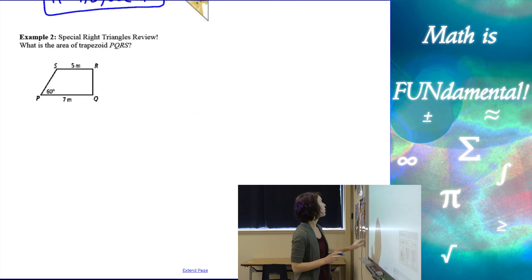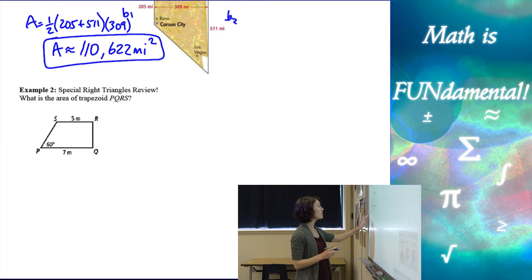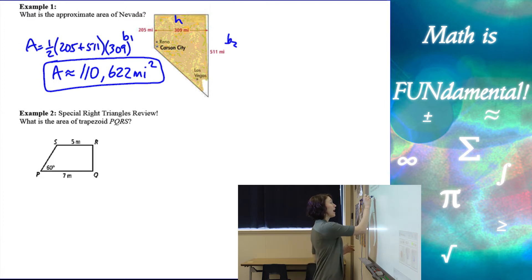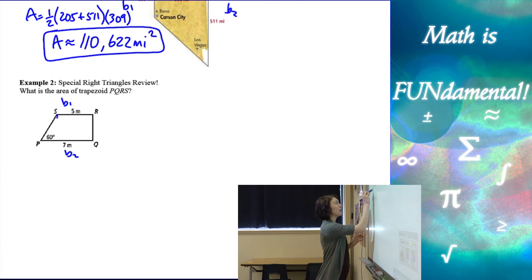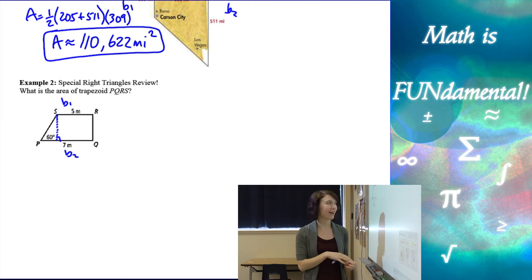All right, second problem here. We're going to find the area of this trapezoid, but if you notice, we have our base one and our base two, but they don't give us the length of the height. But they give us an angle of 60 degrees. And if you remember back a few lessons ago, actually a good number of lessons ago, we talked about special right triangles.